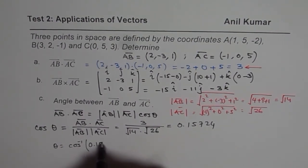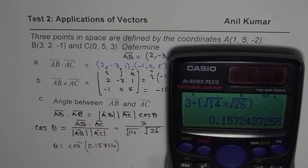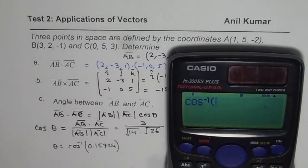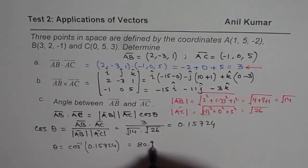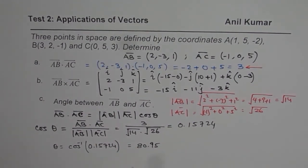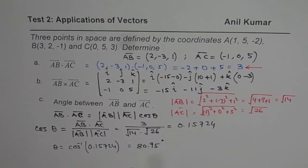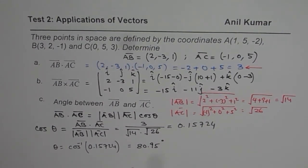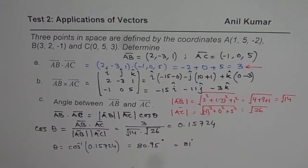It's already there in my calculator, so 15724, and less to cos inverse. So shift cos inverse of the answer itself is equal to 80.95, so we get the value as 80.95, so that becomes the angle between the two vectors, and this is in degrees. So you could always round this, so you can round this to 81 degrees.